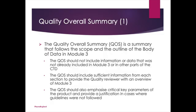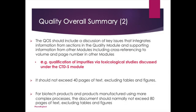Quality Overall Summary (QOS): The QOS is a summary that follows the scope and outline of the body of data in Module 3. The QOS should not include information or data not already included in Module 3, or provide justification in cases where guidelines were not followed. The QOS should include a discussion of key issues that integrates information from sections in the Quality Module and supporting information from other modules, including cross-referencing to volume and page number. It should not exceed 40 pages of text, excluding tables and figures.